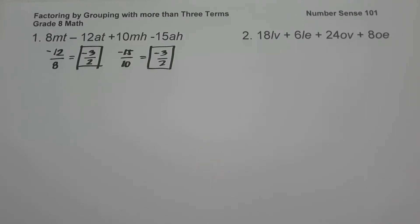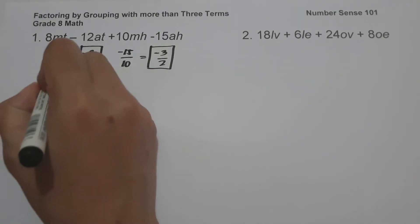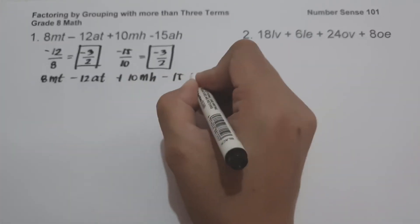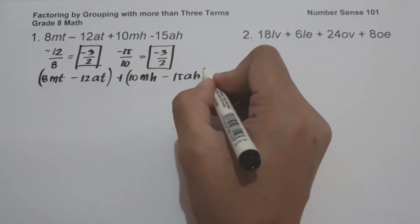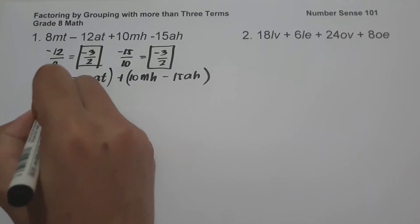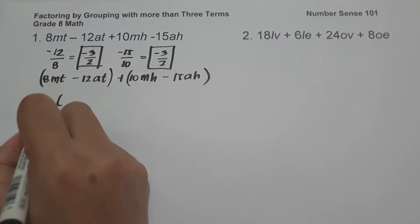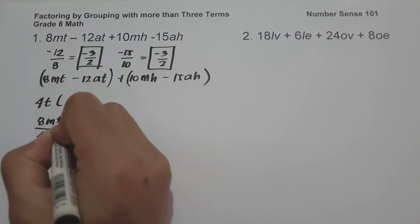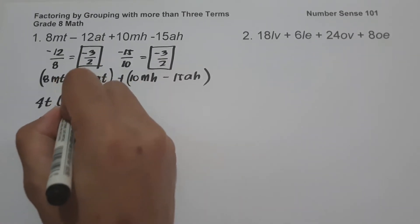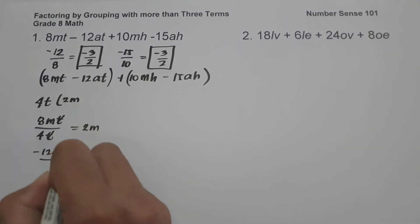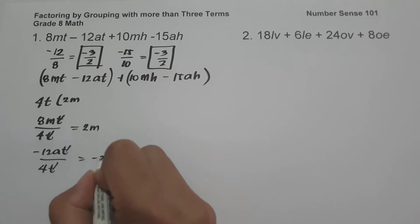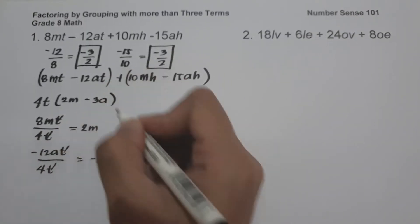Since the first two coefficients have the same ratio as the last two coefficients, we can solve by grouping. So we have 8mt minus 12at plus 10mh minus 15ah. The greatest common factor of 8mt and negative 12at is 4t. So 8mt divided by 4t: cancel t, 8m divided by 4 gives 2m. Then negative 12at divided by 4t gives negative 3a.